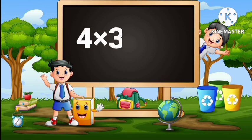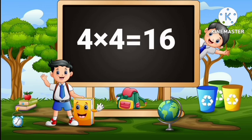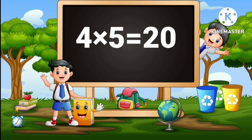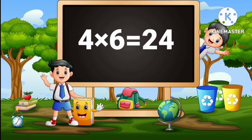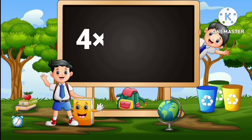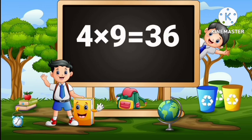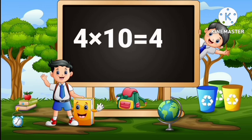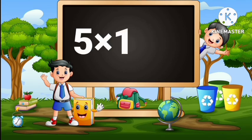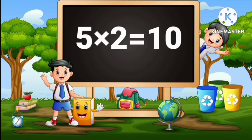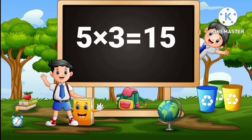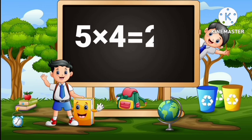4 threes are 12, 4 fours are 16, 4 fives are 20, 4 sixes are 24, 4 sevens are 28, 4 eights are 32, 4 nines are 36, 4 tens are 40. 5 ones are 5, 5 twos are 10, 5 threes are 15, 5 fours are 20.